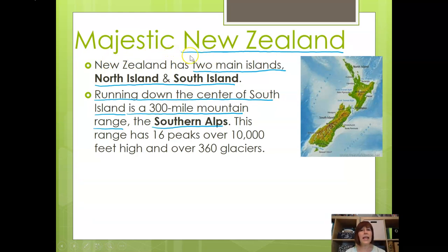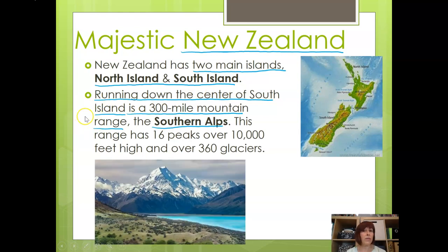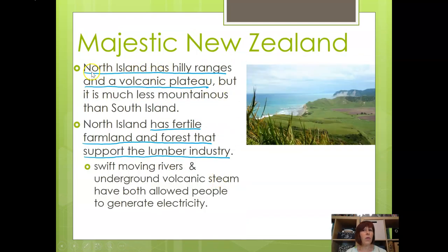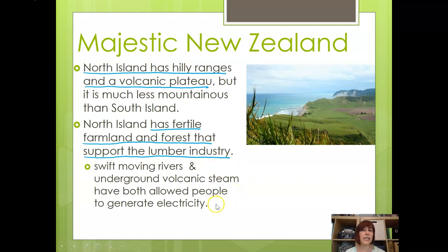Now I want to shift to a different island — New Zealand, which is really two islands. New Zealand has two main islands: the North Island and the South Island. Running down the center of the South Island is a 300-mile mountain range called the Southern Alps. This range has 16 peaks over 10,000 feet high — similar to Mount Hood or Mount Jefferson — and over 360 glaciers. The North Island has hilly ranges and a volcanic plateau, with fertile farmland and forests that support the timber industry. Swift-moving rivers and underground volcanic steam have allowed people to generate electricity for New Zealand.